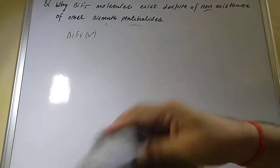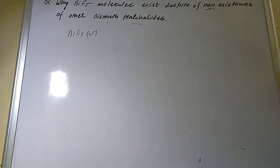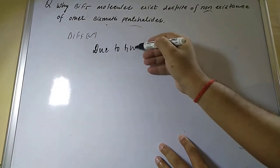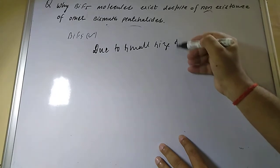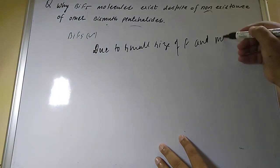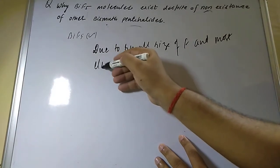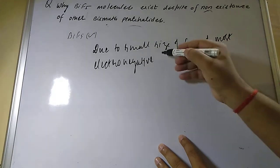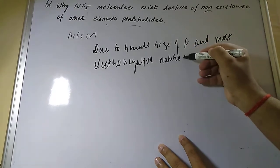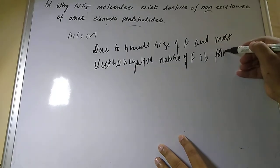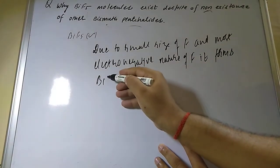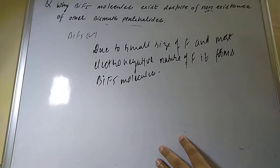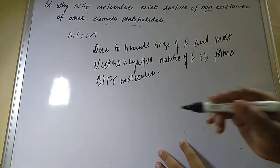The reason BiF₅ is possible is that fluorine has a small size and is the most electronegative atom. Due to the small size and most electronegative nature of fluorine, it forms the BiF₅ molecule.